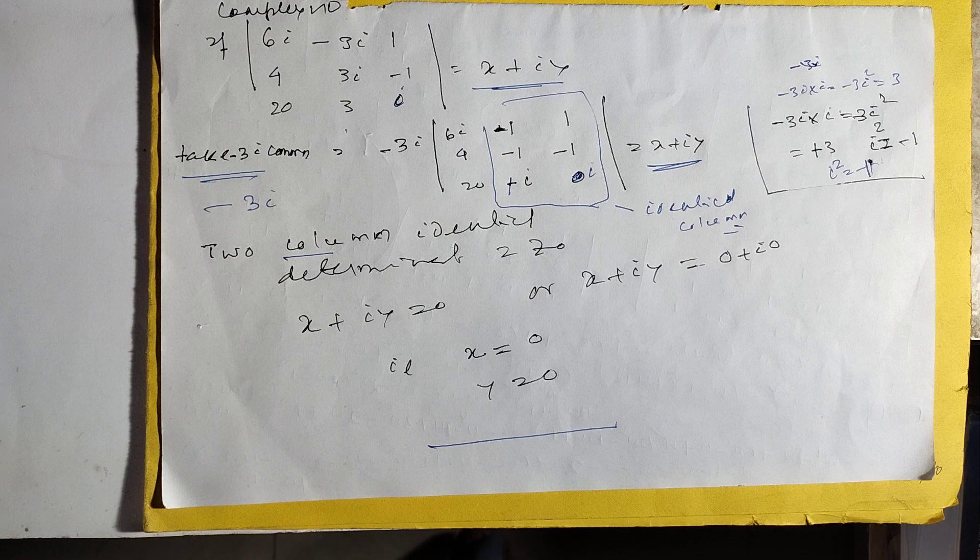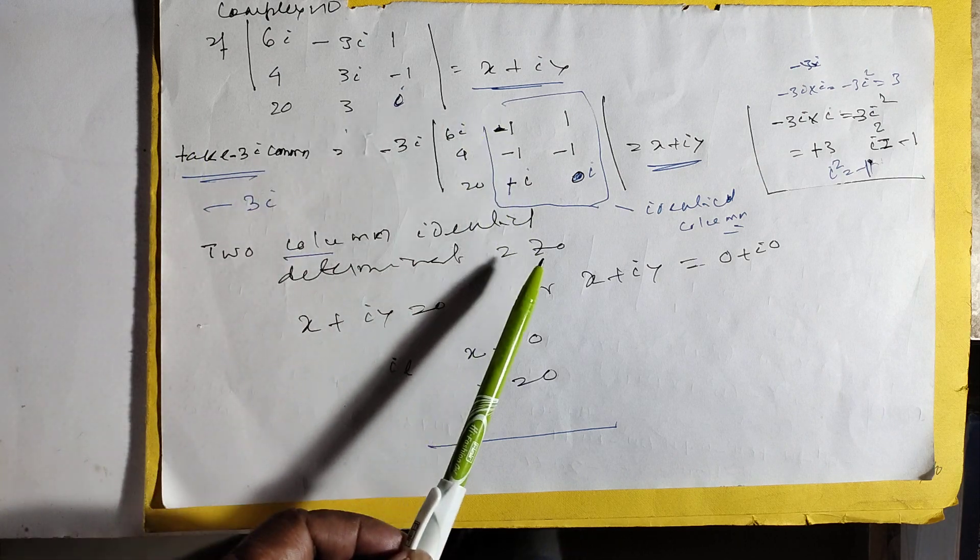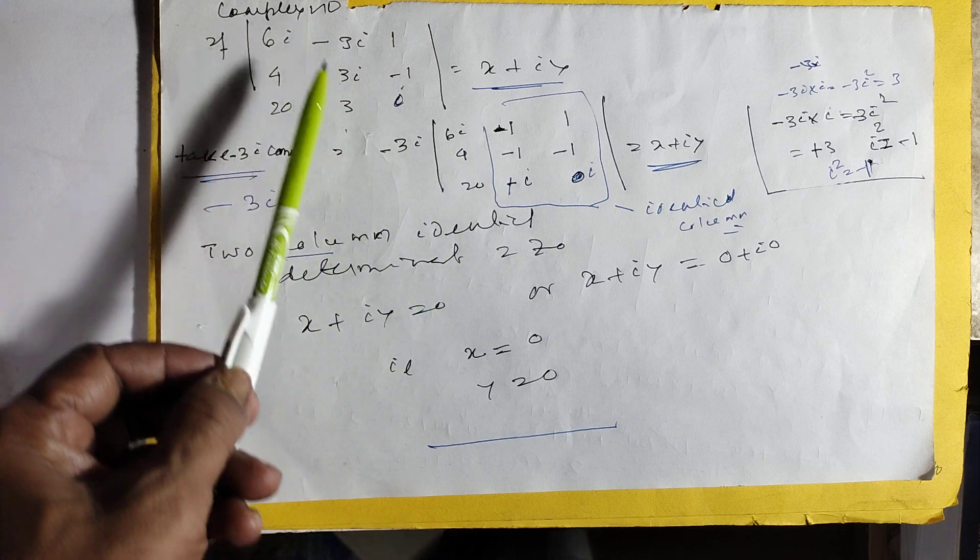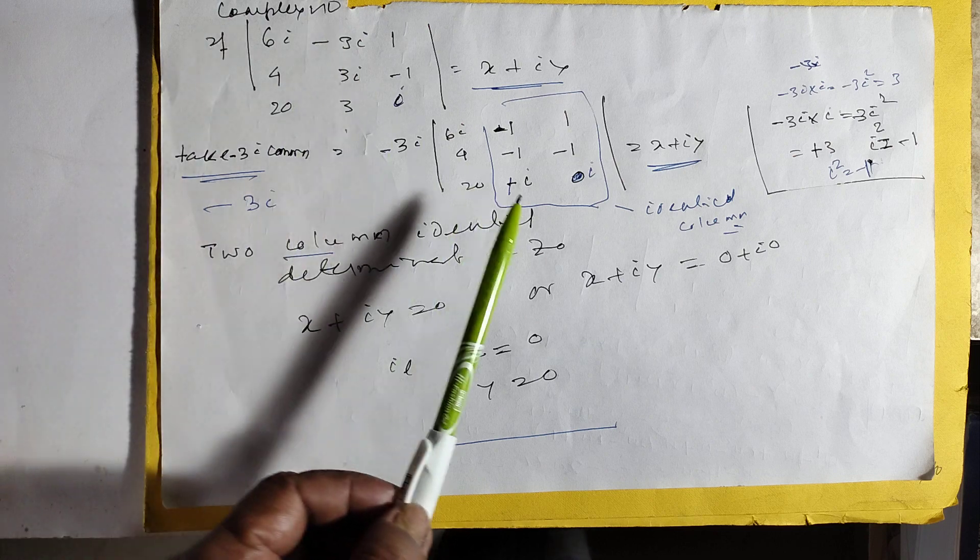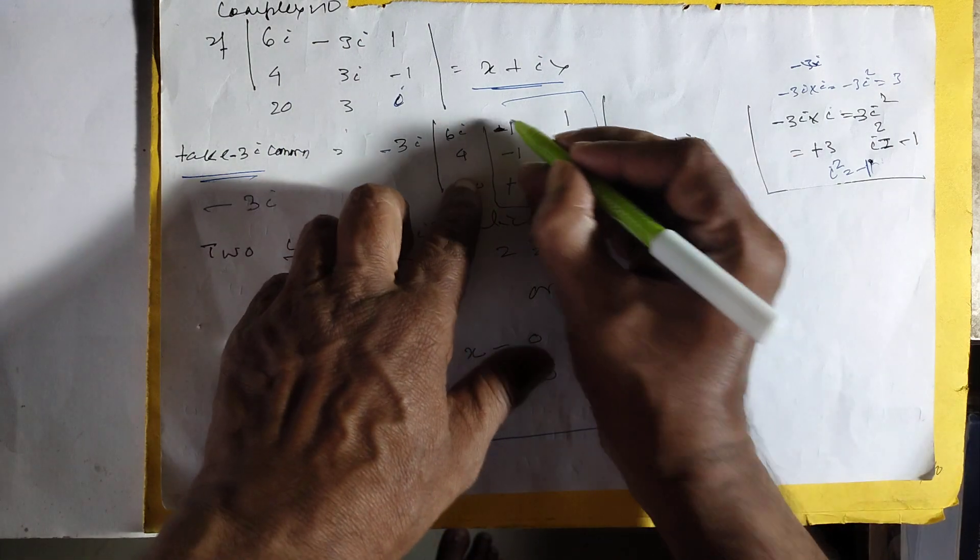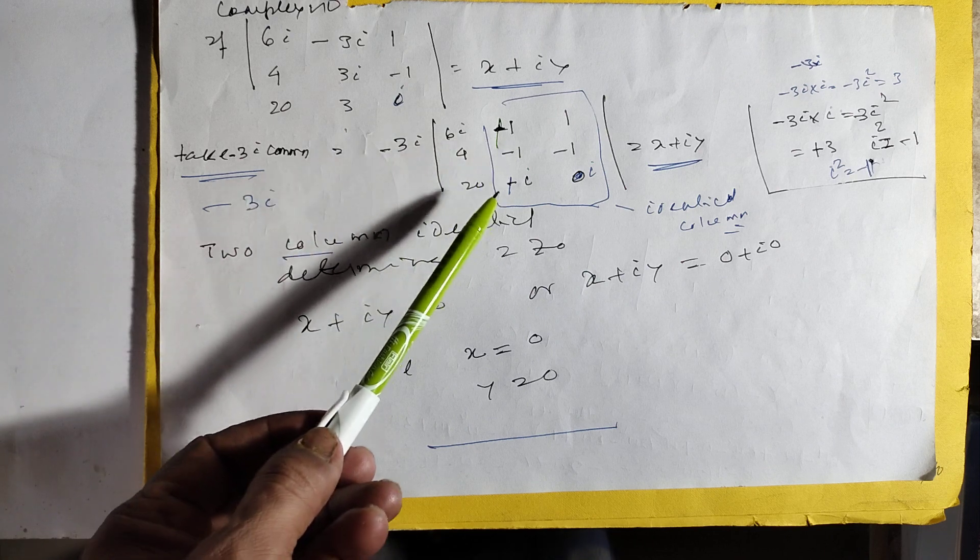In this case, take minus 3i common. Because in this column, what will happen? If I take minus 3, it will come 1, it will come plus 1, it will come plus 1, it will come plus 1. It is minus 1. It is plus iy.